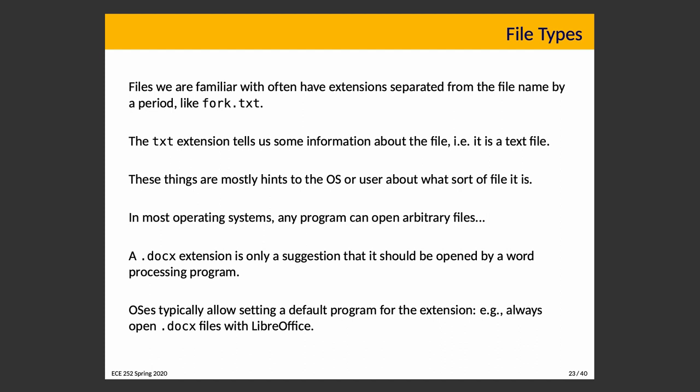File types. Files we are familiar with have extensions separated from the file name by a period, like fork.txt — the dot is a separator between the file name and those last few letters (usually three or four) that represent the file type. These are just hints. The txt extension signals a text file, and the operating system uses that information to decide what program opens it. You can change the extension, but that doesn't change the file content — it just messes up the hint, making it difficult for the OS to know what to open it with.